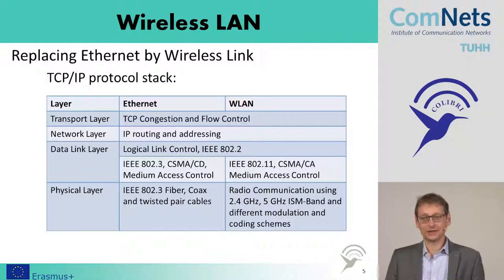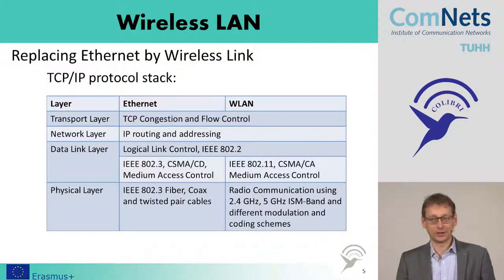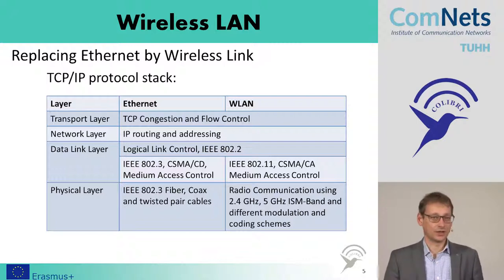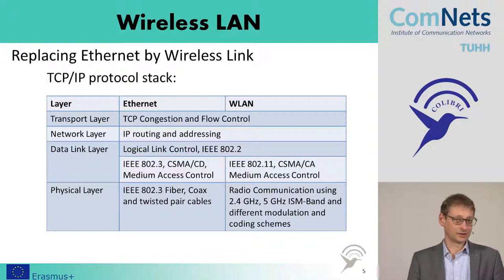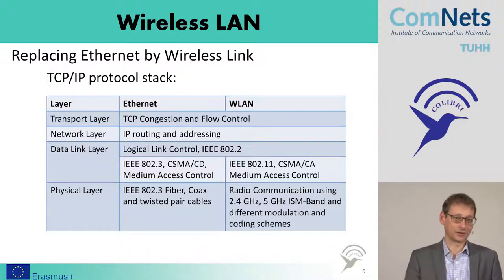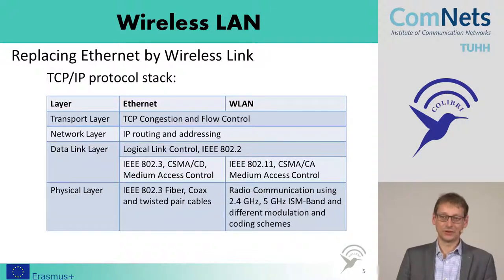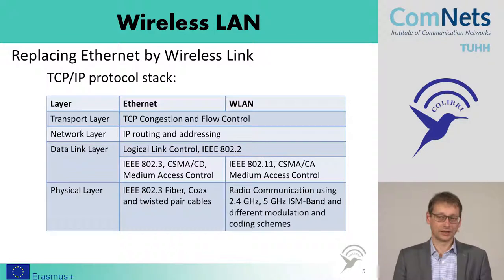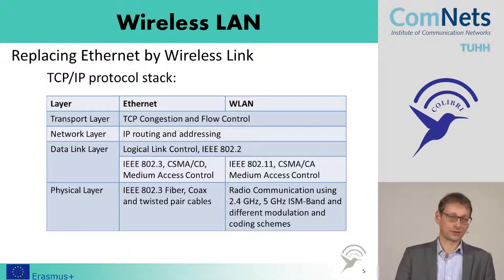The idea of wireless LAN is to exchange only the physical layer — just replace the cable with a wireless link. If you want to do that, you also have to think about how to access the bus or the medium. In the physical layer, you have different means to share a wireless medium, which is why we have the MAC layer and the physical layer exchanged, keeping the rest of the protocol stack the same as with Ethernet.